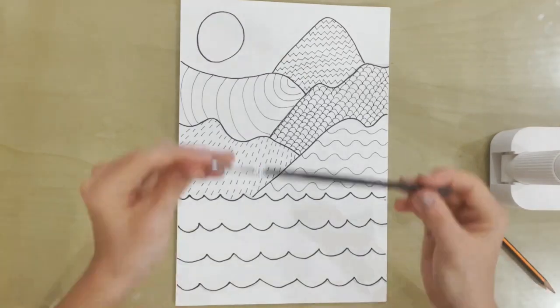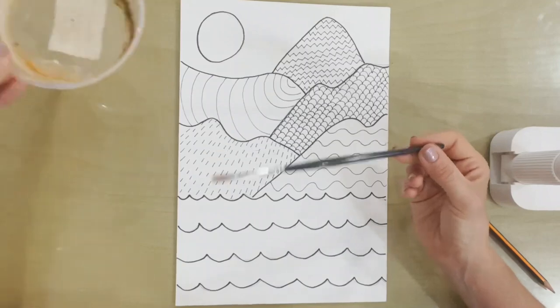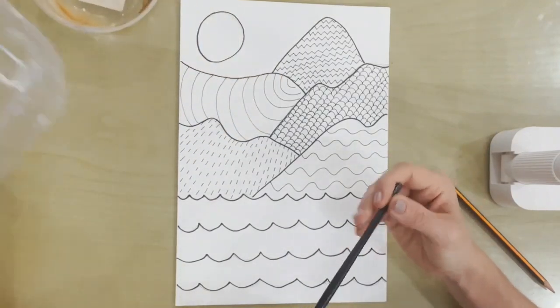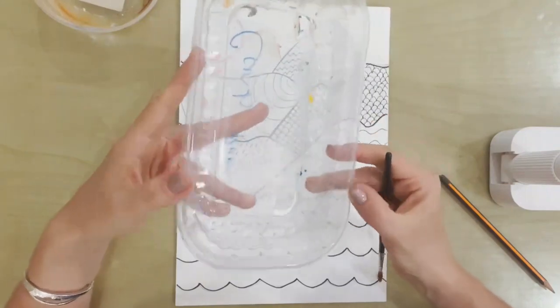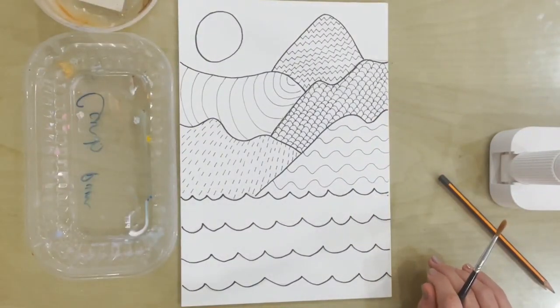So you will need your paintbrush, you will need a pot of water, and you will need a palette to mix your colours in. And we're going to need primary and secondary colours.